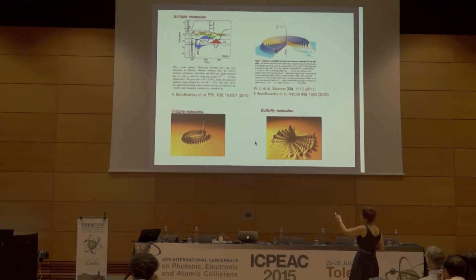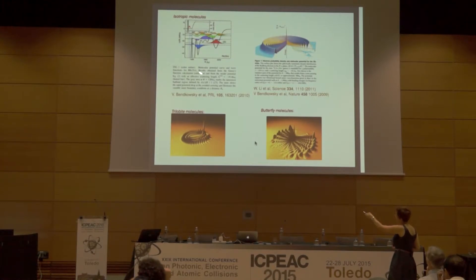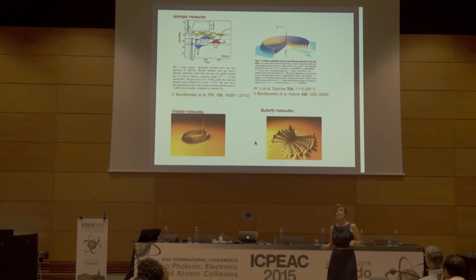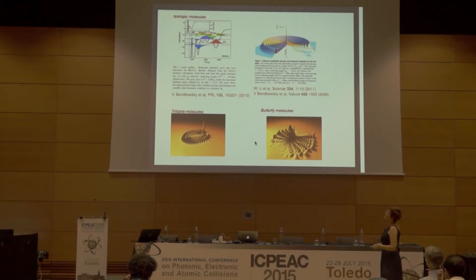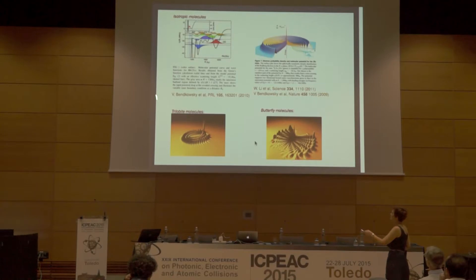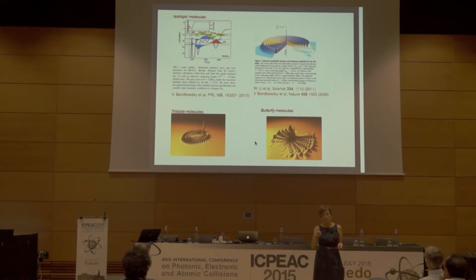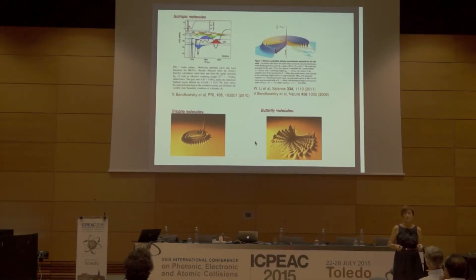This is how the Born-Oppenheimer potential looks as a function of the internuclear distance. As you can see, this ultra-long-range molecule has a size of more than 1,000 — almost 2,000 — atomic units. For this isotropic system the binding energies are on the order of megahertz. If the Rydberg atom is excited to the degenerate manifold, we can get trilobite and butterfly molecules, where the potential depths can be on the order of gigahertz. These have huge dipole moments — kilo-debye — in contrast to the isotropic case which has one or two debye.